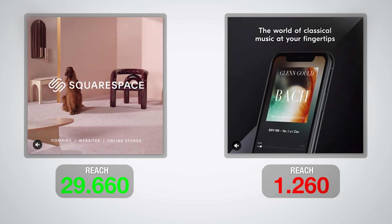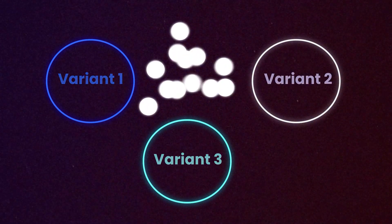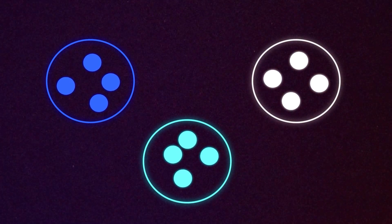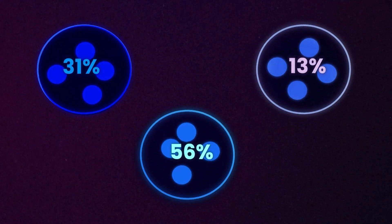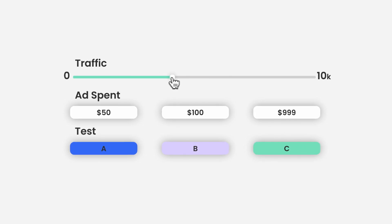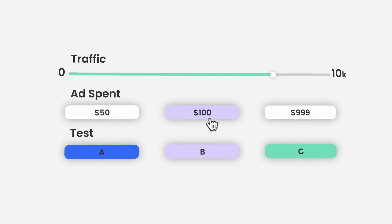First up, let's talk about some constant variables that don't change at all regardless of how much you're spending on a daily basis. Every creative batch or creative test should have between three and six unique variations. The reason we do this is because Facebook is excellent at split testing combinations and variables. If you're familiar with how conversion rate optimization works on a website or a landing page, you know you have typically between two and six test variants that you're sending a percentage of traffic to.